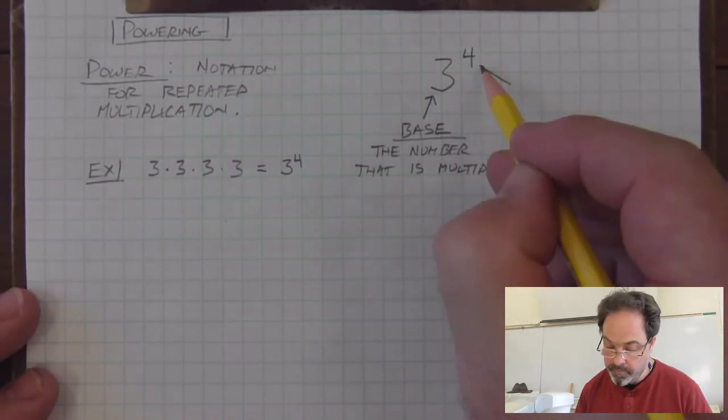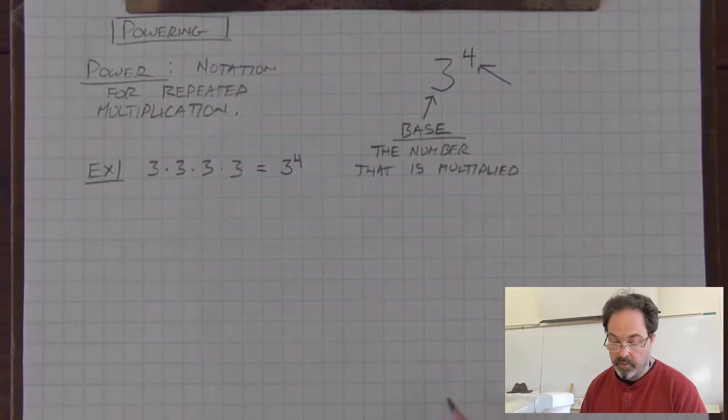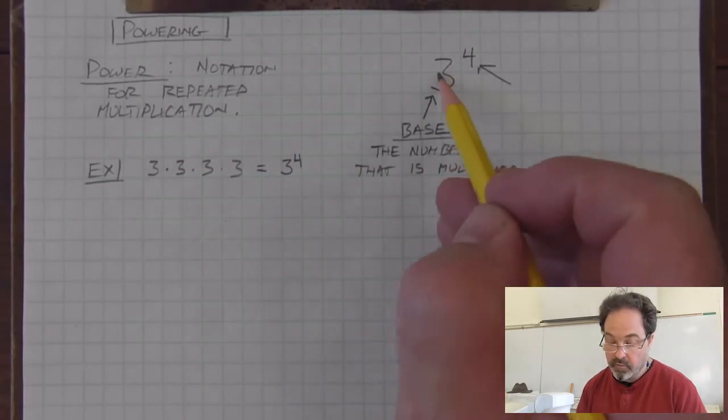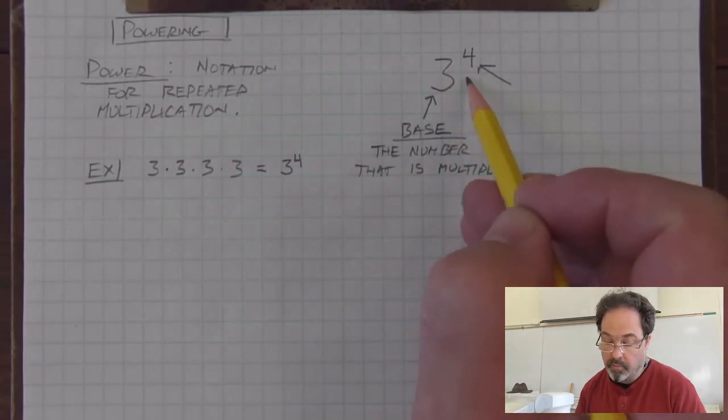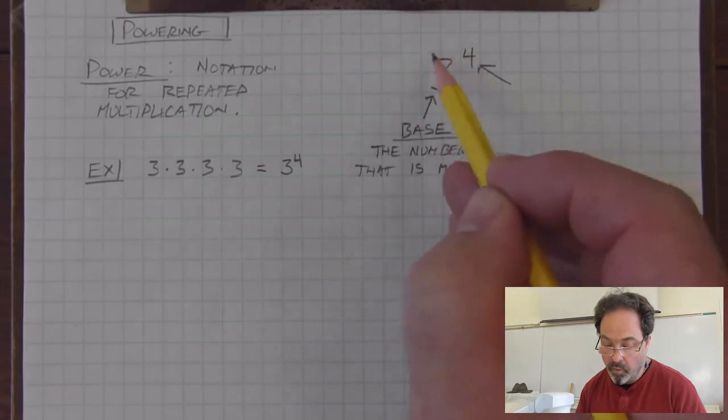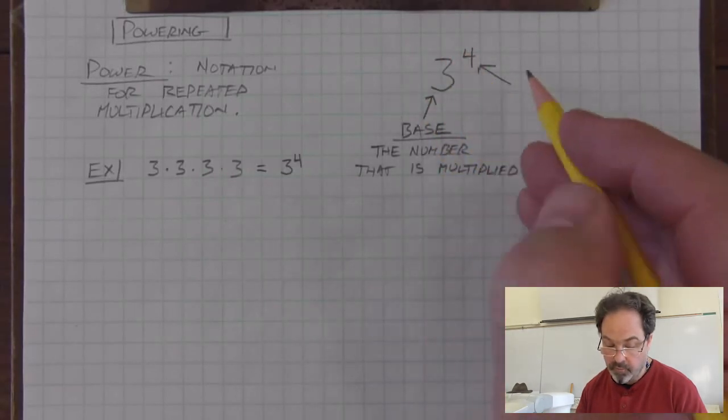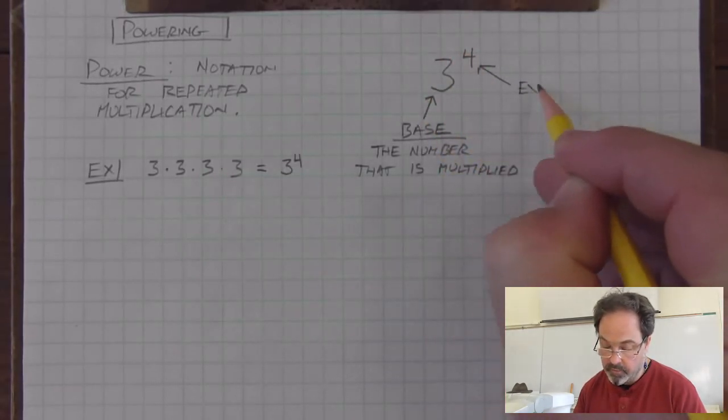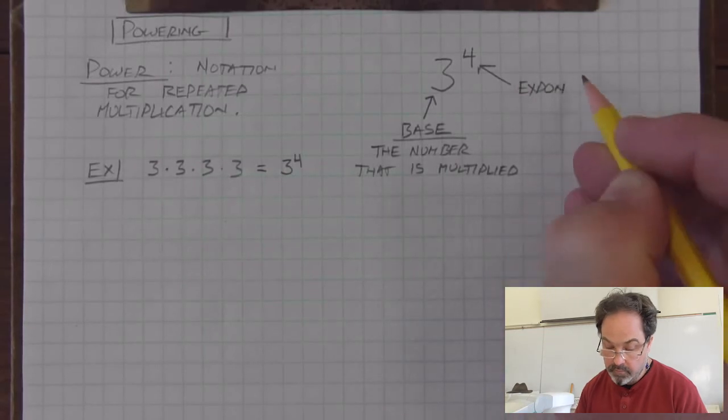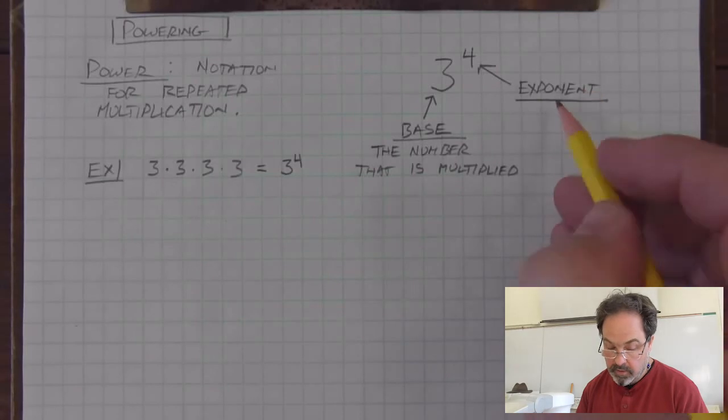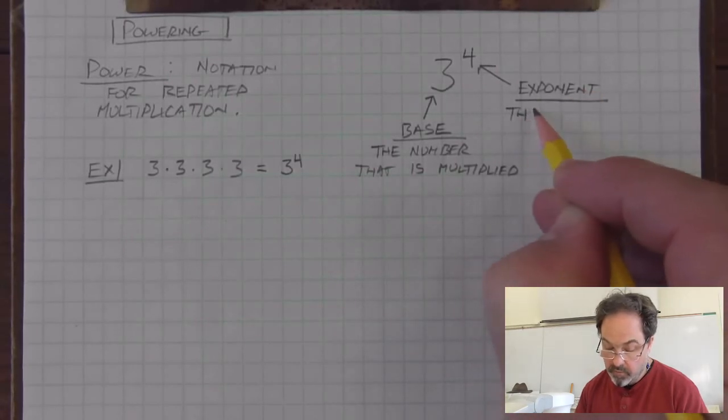The smaller number that we write to the right and a little bit above, like in the top corner of the larger number, we call that the exponent. And the exponent is the number of times the base is multiplied.